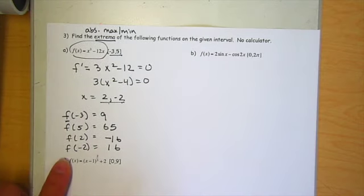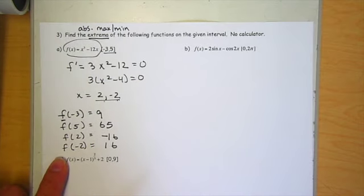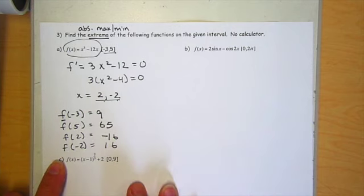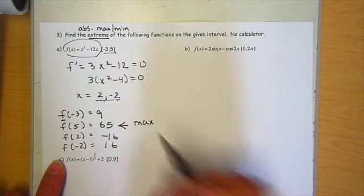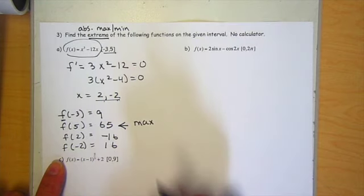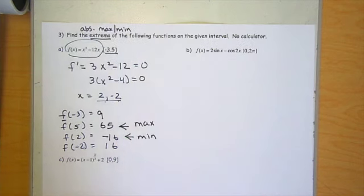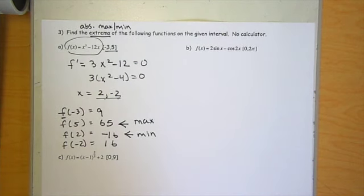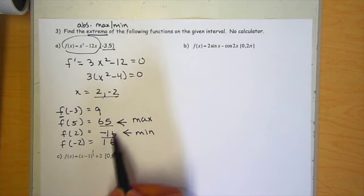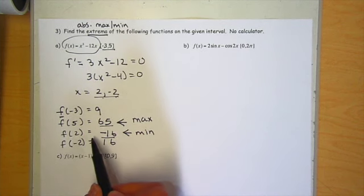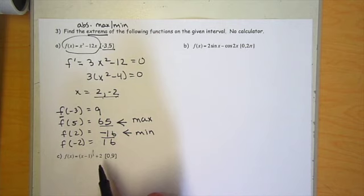So these are the only places where an absolute max or min can occur. So from these possibilities, your max has to be the highest value. So 65 is the highest, so that's going to be my max. And my lowest value is negative 16, so that's my min. So if I only ask for maxes and mins, make sure you only give me the y values. You can write it in function notation like this and just put an arrow next to it. But do not write it as an ordered pair.